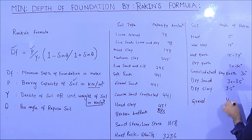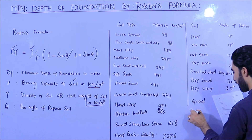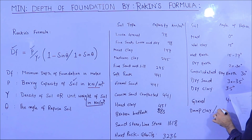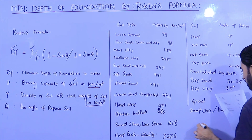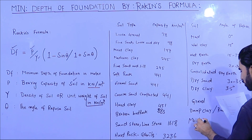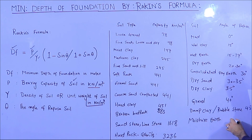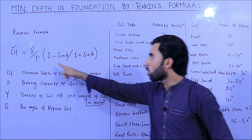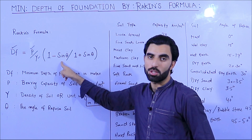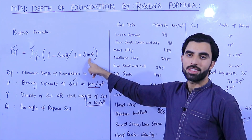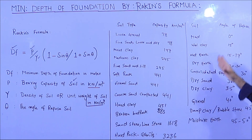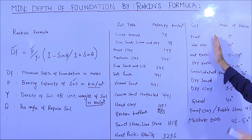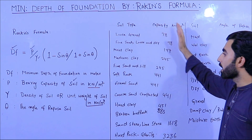For moist gravel, the angle of repose is 40 degrees. For damp or rubble stone, it is 45 degrees. For moist earth, it is 45 to 50 degrees. This is the angle of repose for different types of soil. In the formula, the place of θ in (1 − sin θ) and (1 + sin θ), you will put the angle of repose for the type of soil you have at your site.